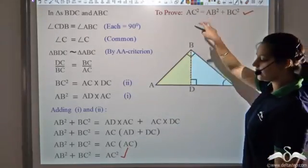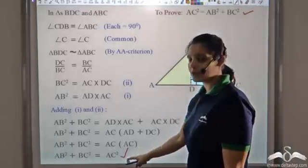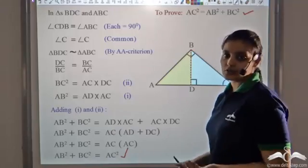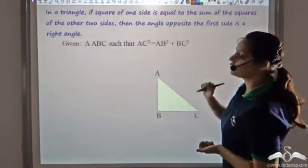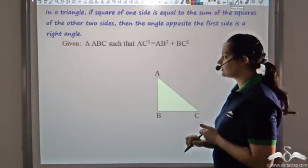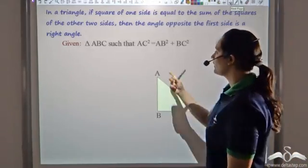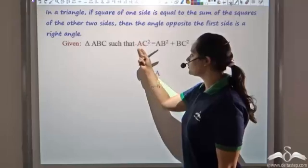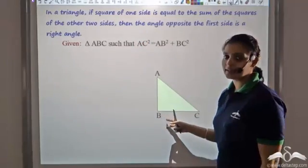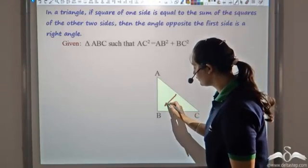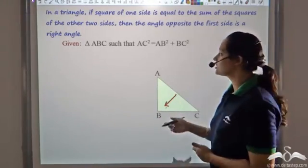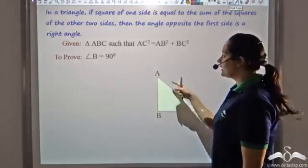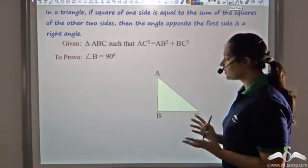Now let us look at the converse of this theorem, which also holds true. The converse states that if in a triangle AC² = AB² + BC², then the angle opposite to AC — that is, angle B — is 90°. So we want to prove that angle B = 90°, given that AC² = AB² + BC².